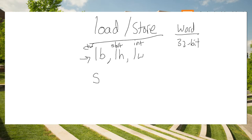We can specify the size — how much of the register we actually want to store in memory. Remember all registers are 4 bytes. The suffix specifies the amount: B for 1 byte takes the lower 8 bits and stores them at the memory address; half-word takes the lower 16 bits; load word takes all 32 bits — 4 bytes of that register — and stores it in memory. Analogously, we can store byte, store half-word, or store word.